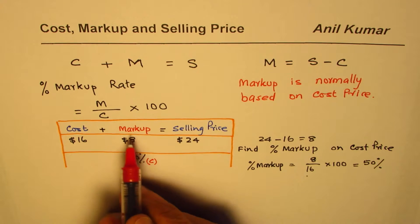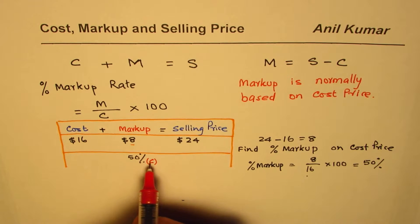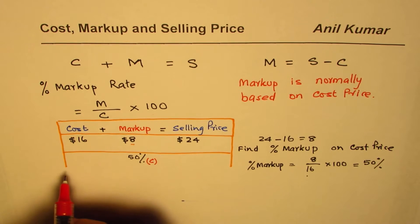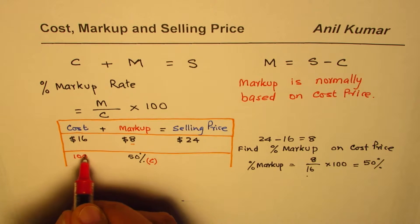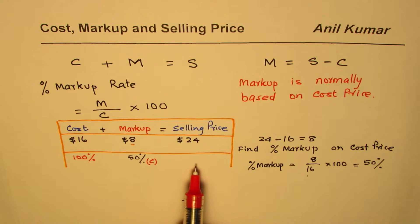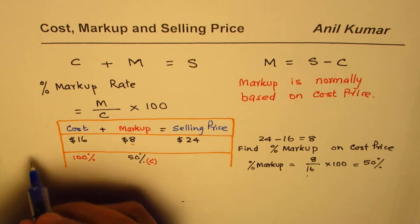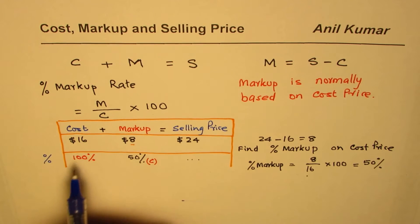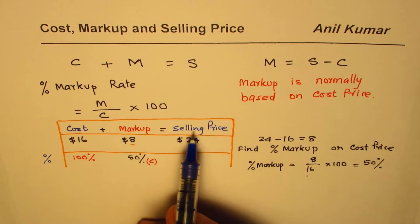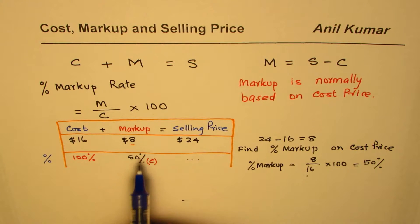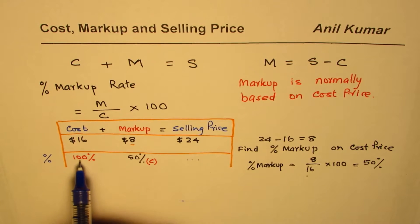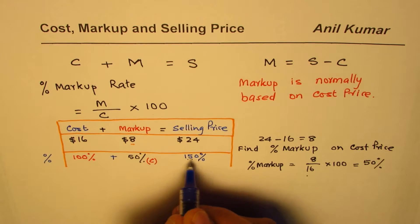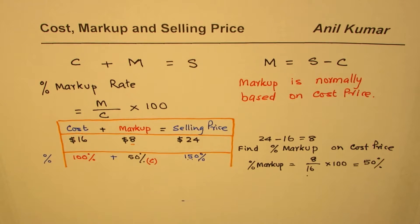Since percent markup is based on cost price, we always consider cost price to be 100 percent. Fifty percent of $16 is $8 — that makes sense. Now from this relation in terms of percent, we can find the selling price as a percent of cost price: 100 plus 50 equals 150 percent of cost price.